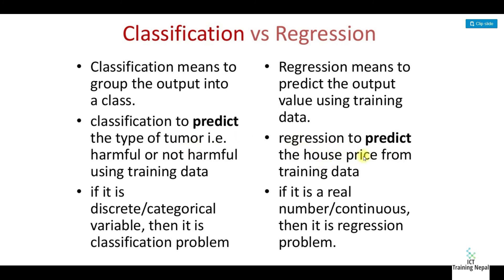The output is a quantity such as pricing, or it involves grouping. If the variable is a discrete category variable, then it is a classification problem. Discrete category type is the classification problem.